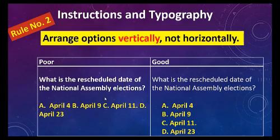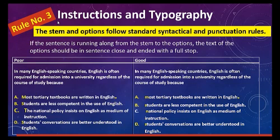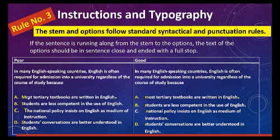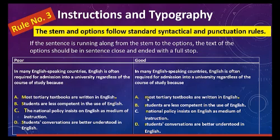Rule number three is that the stem and options should follow standard syntactical and punctuation rules. If the stem is running along as a sentence into the options, the options should not start with a capital letter. For example, 'in many English-speaking countries...' — the continuation should use lowercase. Since the sentence is completing, put a full stop. If the stem ends with a question, put a question mark and run the options using sentence case.